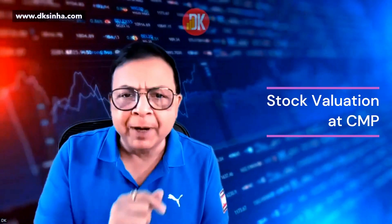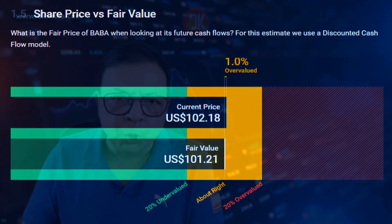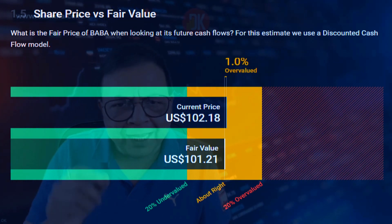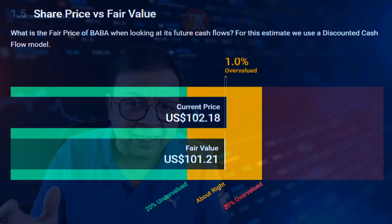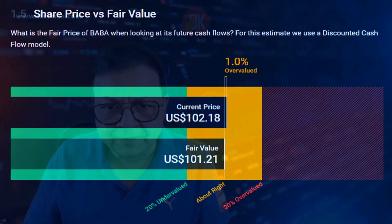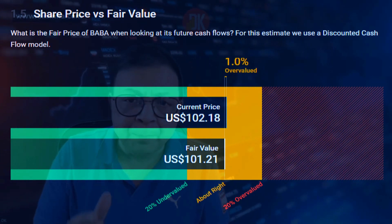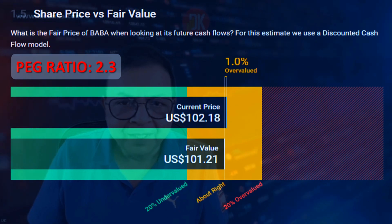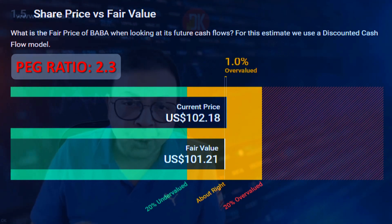Before going to the price chart, let us check the valuation of Alibaba stock at the current market price. Comparing the current market price with the intrinsic or fair value price, it is overvalued by around 1%, so we can say it is fairly priced — neither cheap nor expensive. However, when we look at the PEG ratio, it stands at 2.3, which means in terms of PEG ratio it looks expensive.